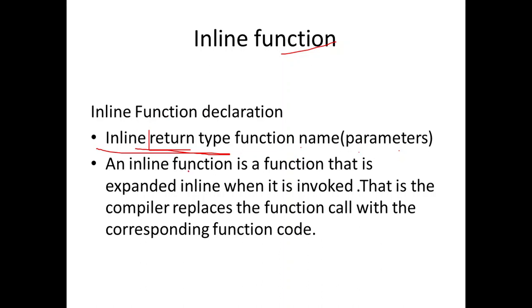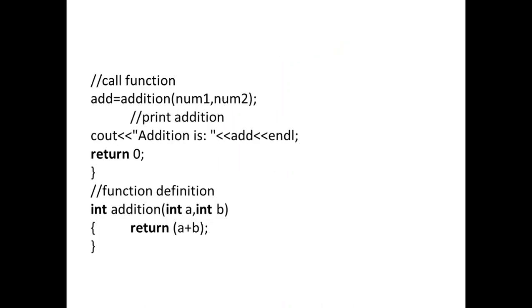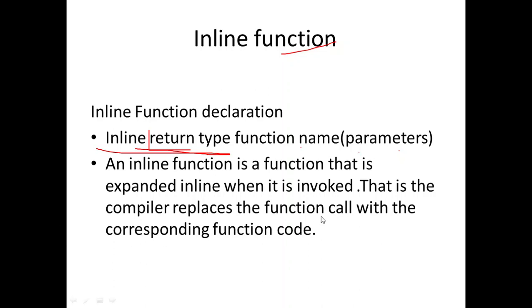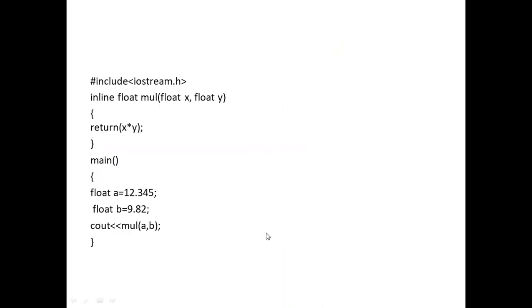The purpose of the inline function: when a normal function is called, the program control automatically checks where the function is defined. num1 is copied to the parameter, num2 is copied, the result is computed and returned. But in the case of an inline function, the compiler replaces the function call with the corresponding function code — there is no control transfer.